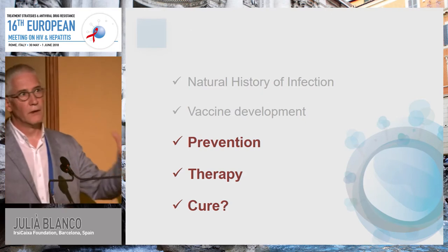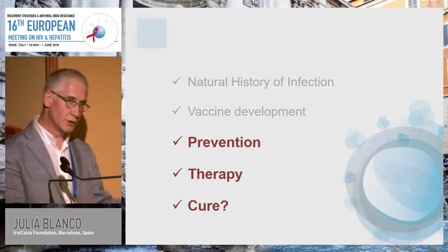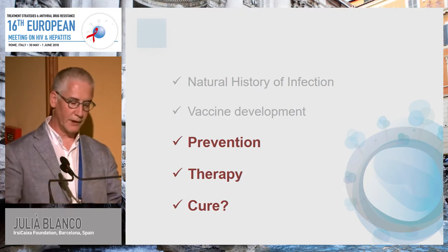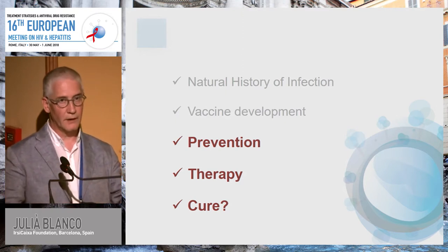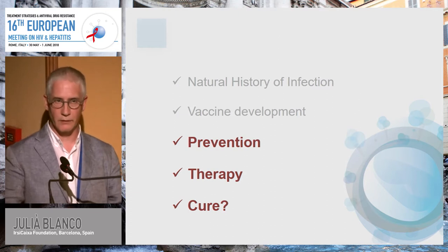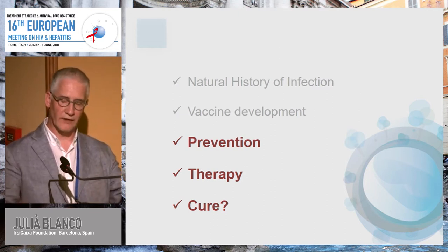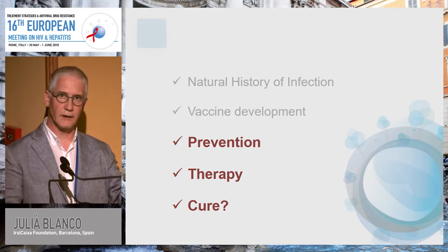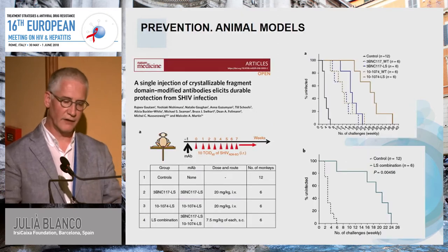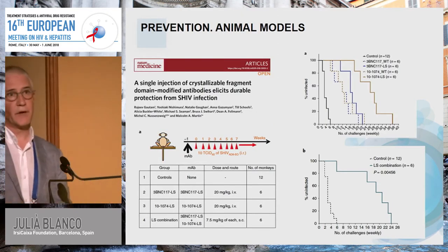So we have a toolkit to start using antibodies for HIV prevention, therapy, and why not for HIV cure. We have a list of monoclonal antibodies, we know their immunological functions, and we can modify the half-life of those antibodies.